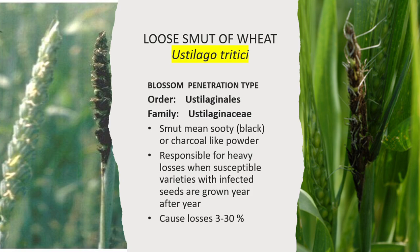First, we'll discuss in detail loose smut of wheat, caused by Ustilago tritici. This is a blossom-penetration type disease that enters the plant through the ovaries during the heading stage. Ustilago tritici belongs to the order Ustilaginales and family Ustilaginaceae — all pathogens causing smut belong to the genus Ustilago.